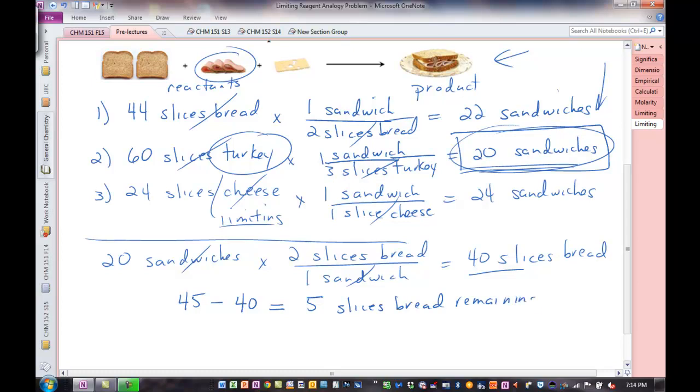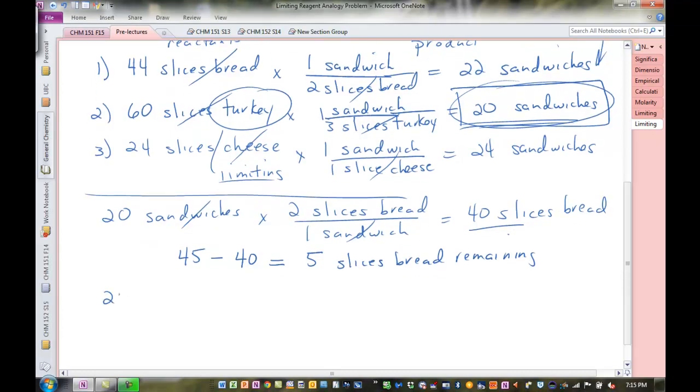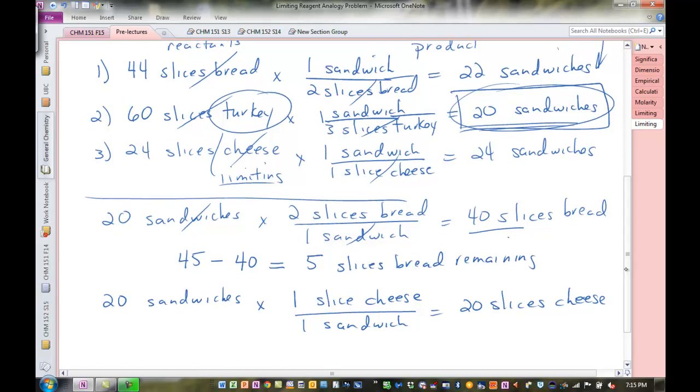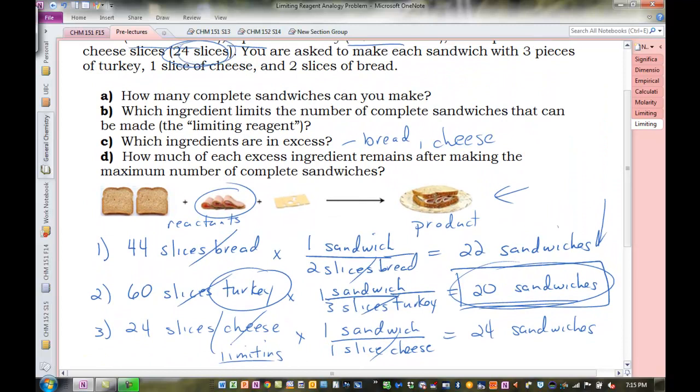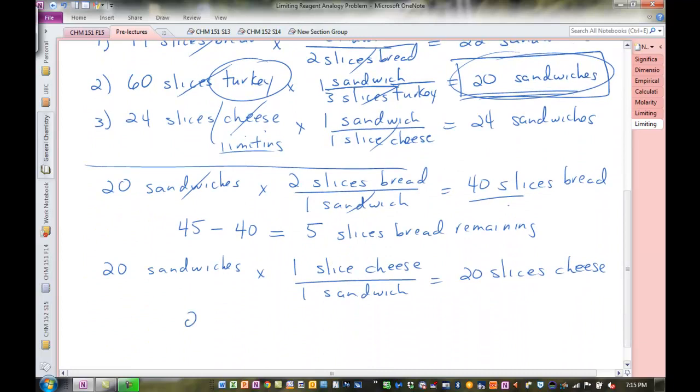In excess. So there's excess bread, five slices left over. We can do the same thing for the cheese. This is somewhat redundant, you can do this in your head, but let's write it out as we would write a mole ratio. We need one slice of cheese to make one sandwich. And so we're going to need 20 slices of cheese to make those 20 sandwiches. How many slices of cheese did we start with? I have it here on part three, but we can scroll up to the top if we want. We started with 24 slices of cheese. 20 were used to make the sandwiches.